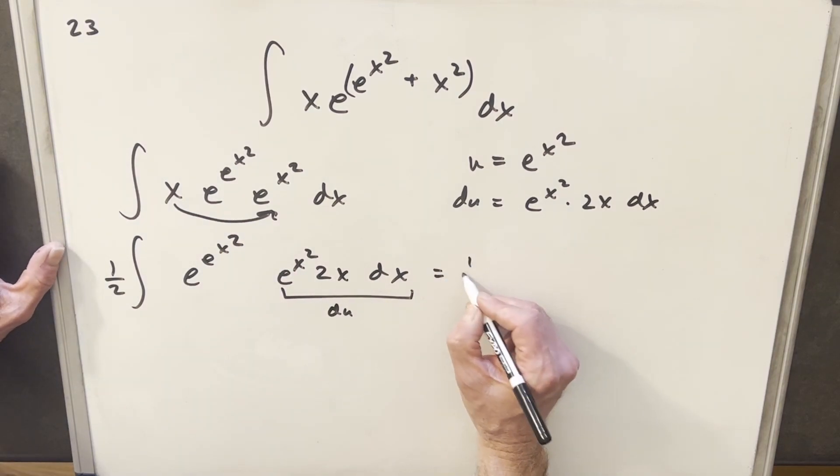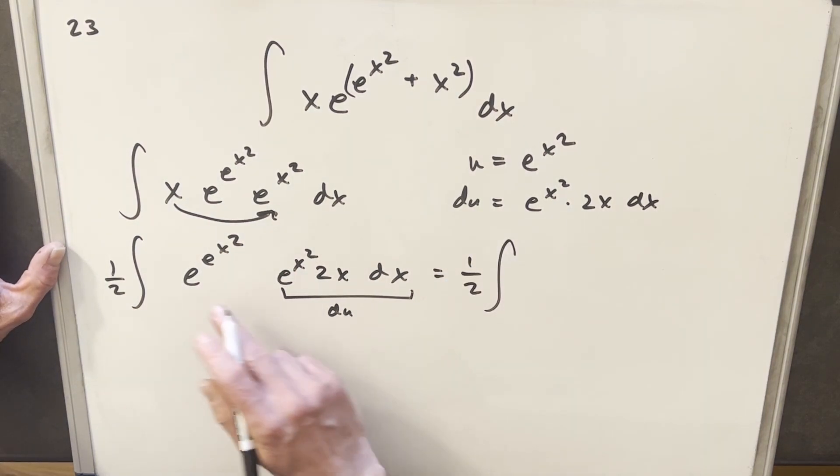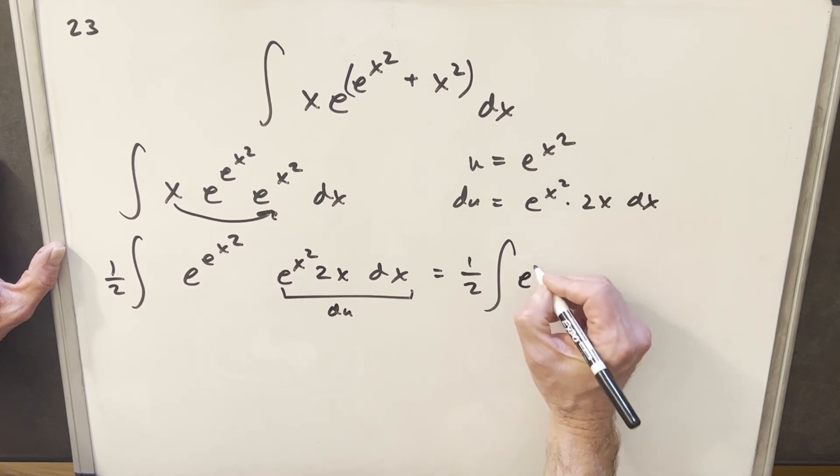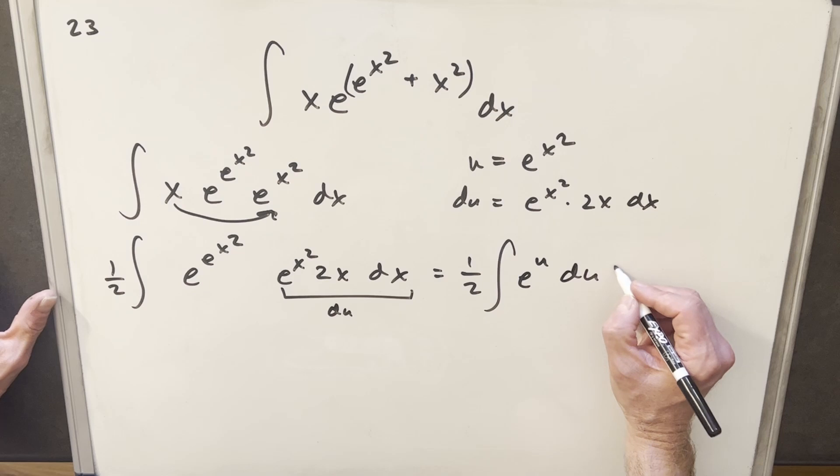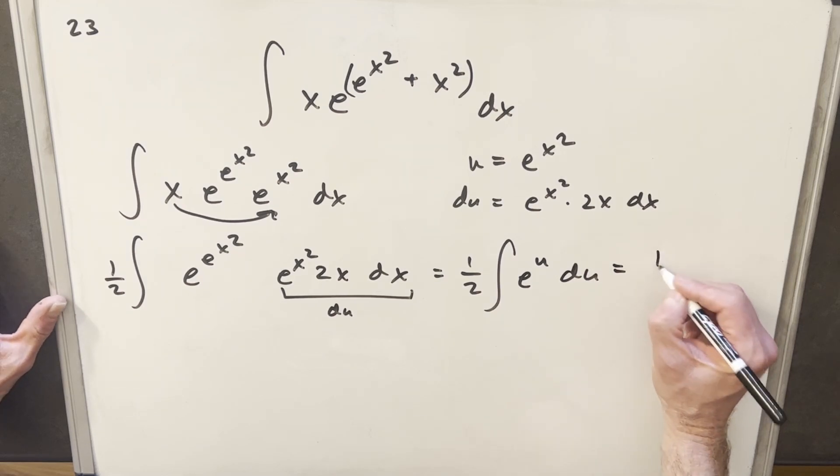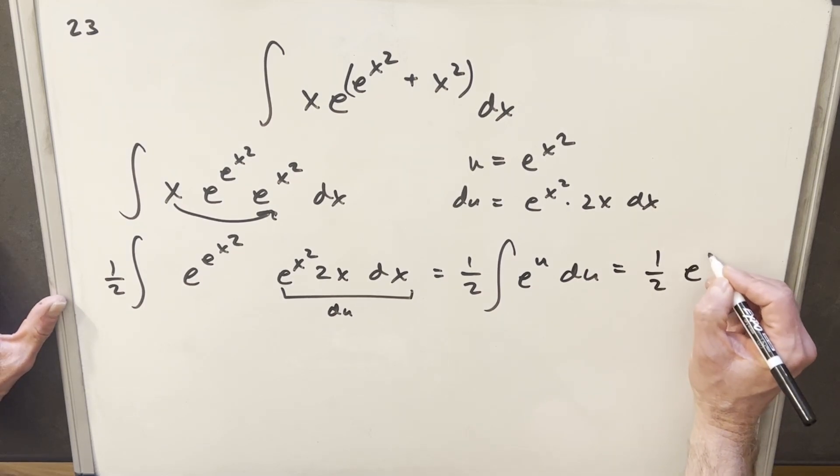And then I'll make my substitution. Got our one half out front. This thing is going to be e to the u, and this thing's just du. Okay, very simple. Integral of e to the u is e to the u, so we're just going to have half e to the u.